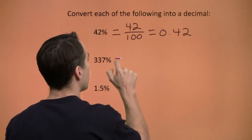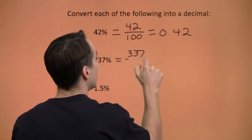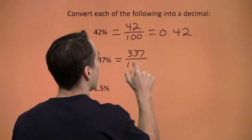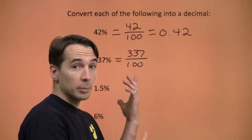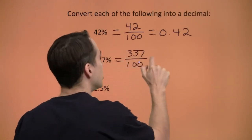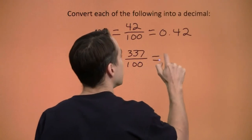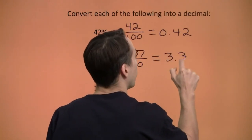337 percent — that's 337 per 100. Again, dividing by 100, move the decimal point two places to the left: 3.37.